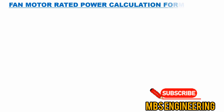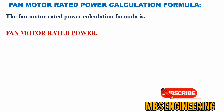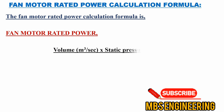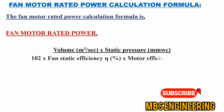We will learn and understand the formula used to calculate the fan motor rated power. The fan motor rated power is equal to volume in meter cubes per second, multiplied by the static pressure in millimeters of the water column, and the obtained value is divided by 102, multiplied by the fan static efficiency in percentage and the motor efficiency in percentage.